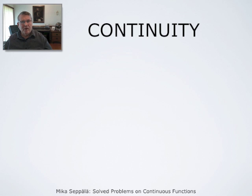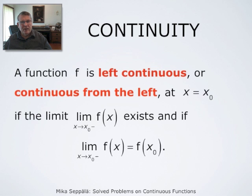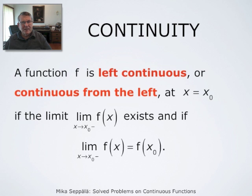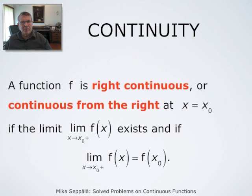We need the concept of left continuity and right continuity. We say that a function is left continuous at a point x equals x₀ if it has a left-hand limit at that point — that is, if the numbers f(x) have a limit as x approaches x₀ through numbers which are smaller than x₀ — and if that limit agrees with the value of the function at x₀.